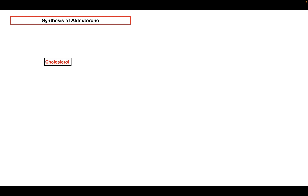In order to form aldosterone, we need a starting material, and that starting material is cholesterol. Aldosterone is derived from cholesterol, which is obtained from two main sources. The first source is circulating LDL — a protein that carries cholesterol. Cells use LDL receptor-mediated endocytosis to bring LDL into the cell, and then use the cholesterol carried by that LDL to form corticosteroids and other things. So circulating LDL is a very important source of cholesterol.